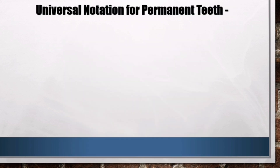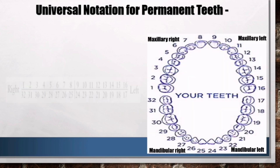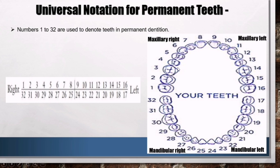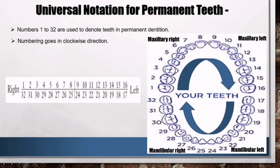Universal Notation for Permanent Teeth: numbers 1 to 32 are used to denote teeth in permanent dentition. The numbering begins from the posterior-most tooth in the upper right quadrant, that is the maxillary right third molar, and numbering goes in a clockwise direction. For example, the left maxillary third molar is designated as 16, the left mandibular third molar is 17, and the right mandibular third molar is 32.